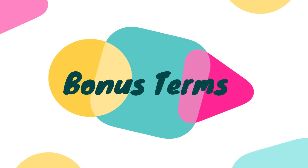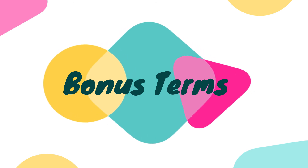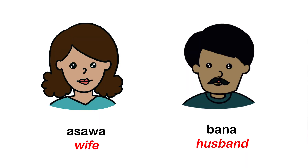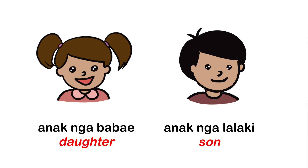We have a few bonus terms. Husband in Bisaya is bana, and wife is asawa. Daughter is anak nga babae, and son is anak nga lalaki.